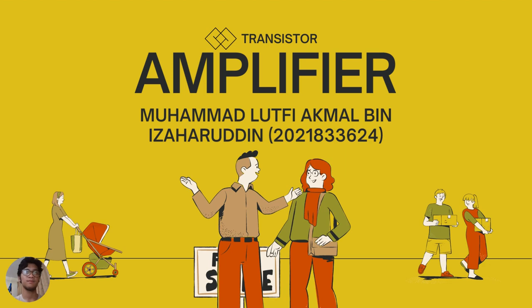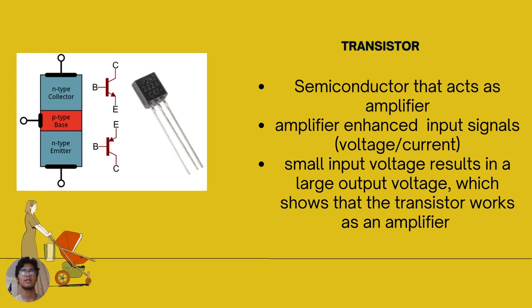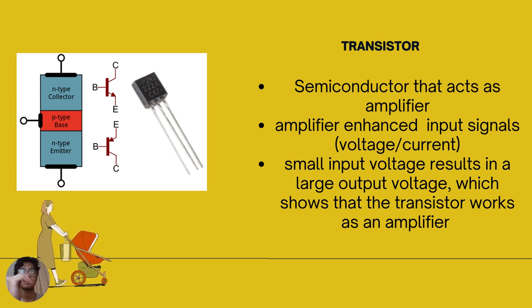First of all, a transistor acts as an amplifier by raising the strength of a weak signal. The DC bias voltage applied to the emitter-base junction makes it remain in a forward bias condition. This forward bias is maintained regardless of the polarity of the signal.